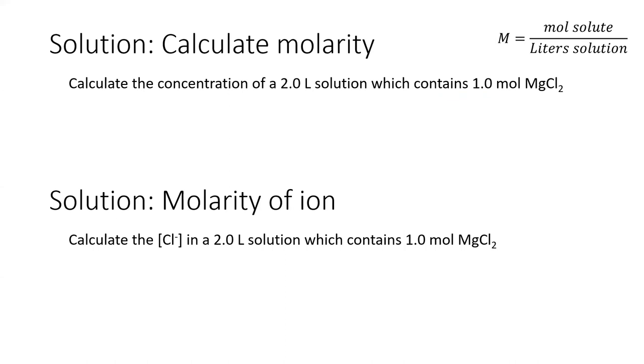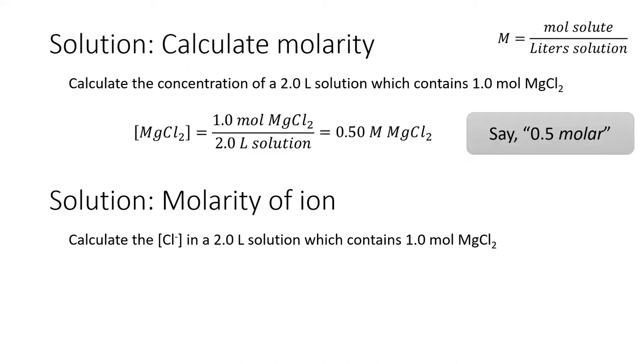To calculate the concentration of magnesium chloride, take the one mole of magnesium chloride and divide it by two liters of solution. The concentration is 0.5 molar.